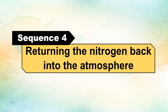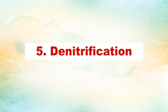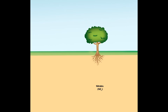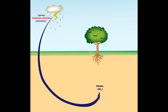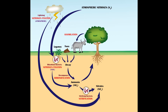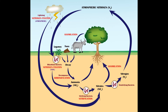Sequence 4: Returning nitrogen back into the atmosphere. Denitrification: The nitrates produced from nitrogen fixation in the atmosphere and soil, and from dead organic matter, will be converted again into nitrogen gas by the denitrifying bacteria, then returned into the atmosphere. This process of converting nitrates into nitrogen gas is denitrification.